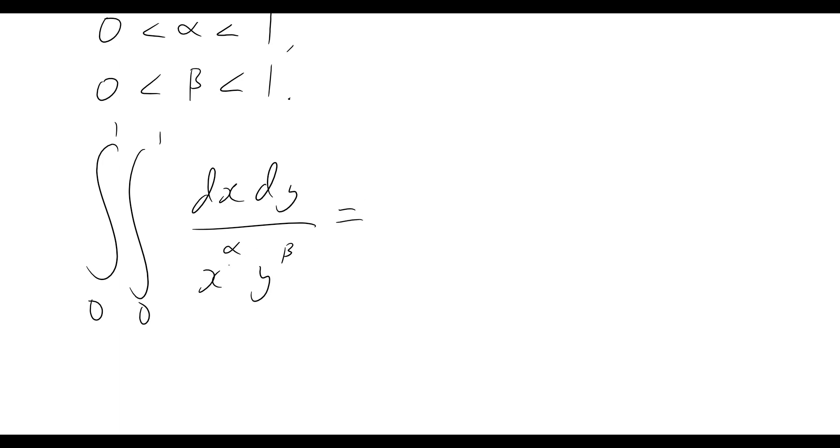But of course we know that writing x to the alpha y to the beta on the denominator, we can just rewrite those in the numerator. However, what we'll do is we'll just write them with a negative indice. So that'll be x to the minus alpha y to the minus beta dx dy.